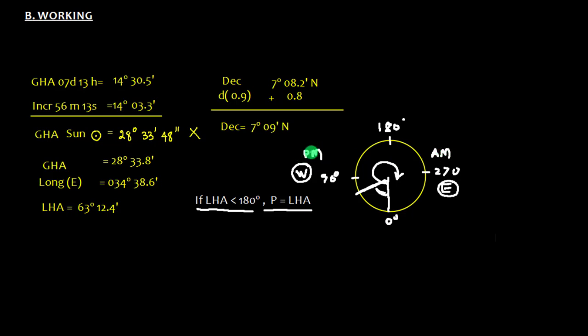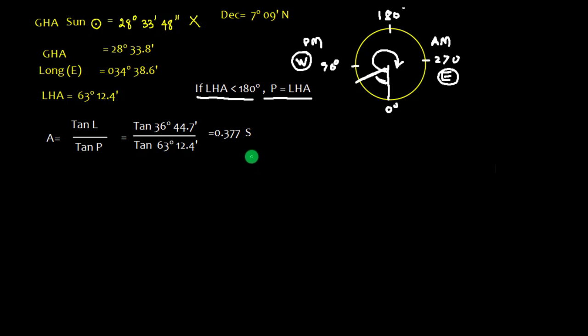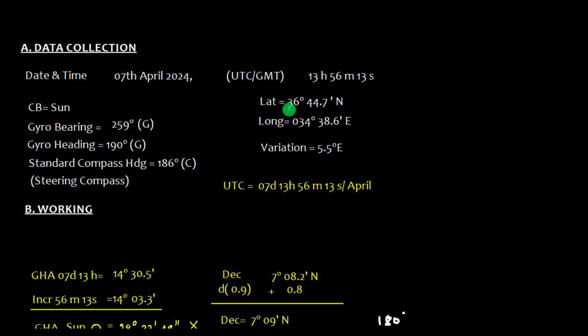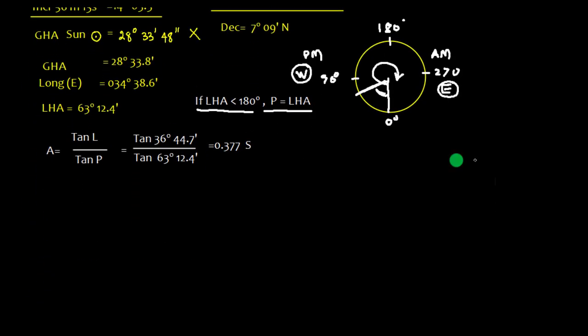Now we need to find the factor A, which is A equals tan latitude upon tan P. The value of tan latitude: latitude is 36 degree 44.7. The angle P we have already obtained, which is 63 degree 12.4, because P is equal to LHA. So we are getting this value. We can round off to three places, that is good enough, because Norie's table is having only two places, so maximum we can use three places.